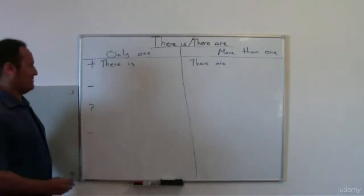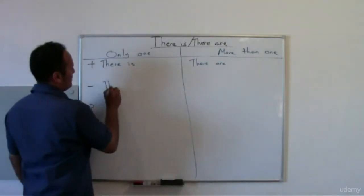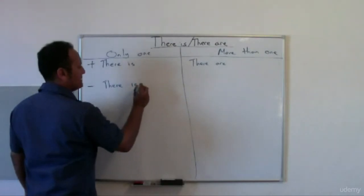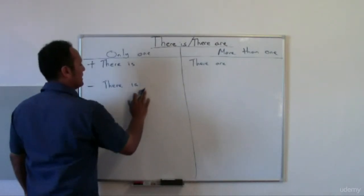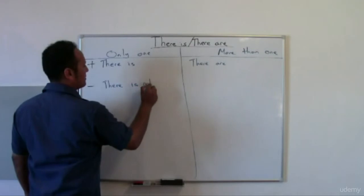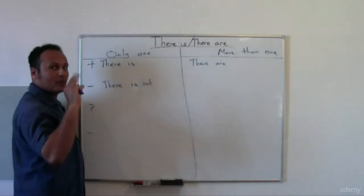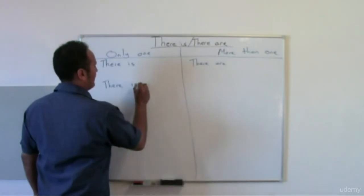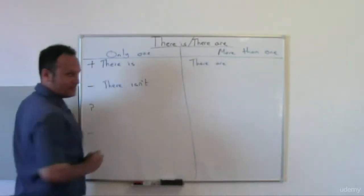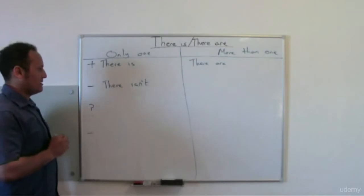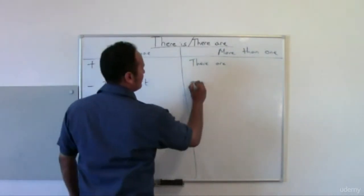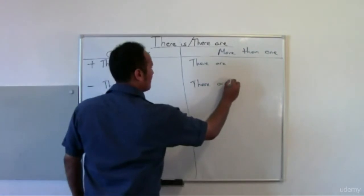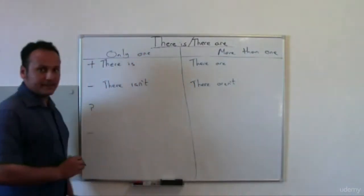What about the negative? 'There isn't,' or 'is not' — you can say 'is not' when you write, but when you speak, say 'there isn't'. On the other side, 'there are not,' but when you speak, say 'there aren't'.